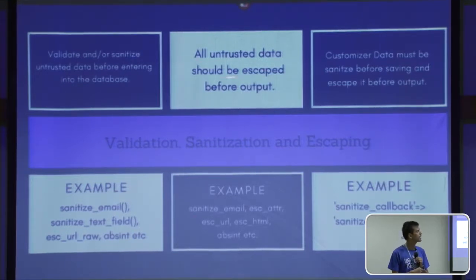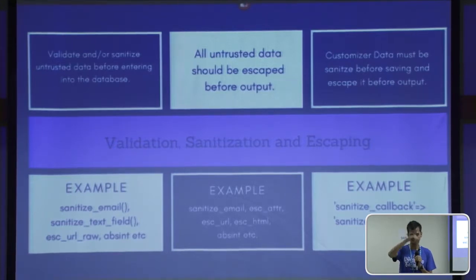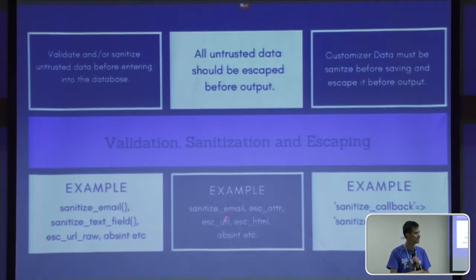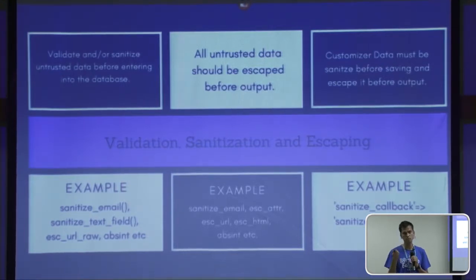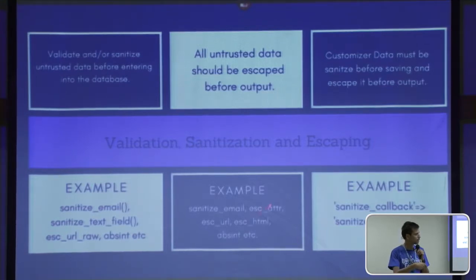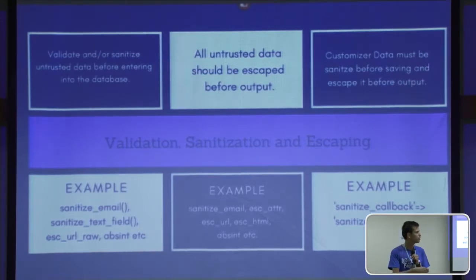All untrusted data should also be escaped before output. For example, if you make a field for a URL and give the output, you need to put esc_url and then the field name so that your URL will be escaped and secure. The escape functions available are: sanitize_email, esc_attr, esc_url, esc_html, absint, etc. But you need to use the proper escape function for the proper use. For example, esc_attr is for escaping HTML attributes, and esc_html is generally for removing HTML tags.